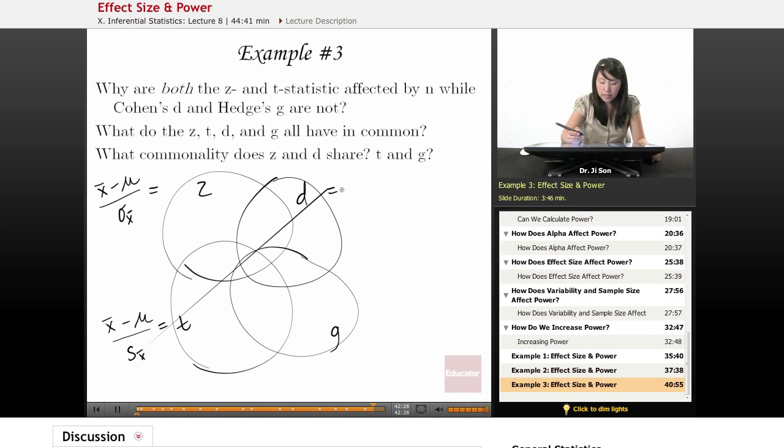Whereas in D we have, sorry for this, makes our picture even crazier. Okay. For D we have the distance, same distance, here just divided by sigma. And here we have the same distance divided by S.